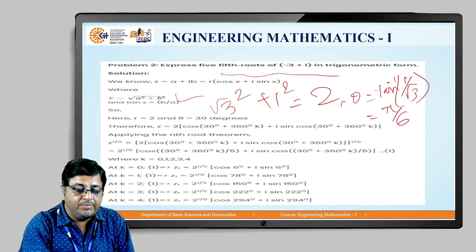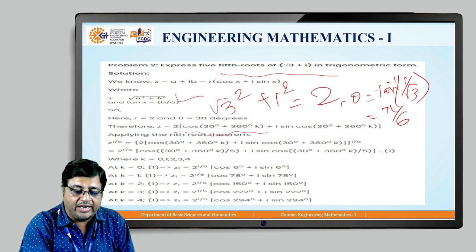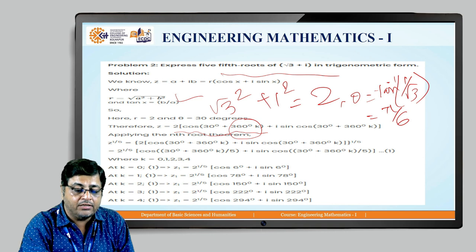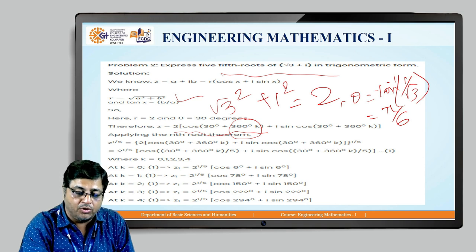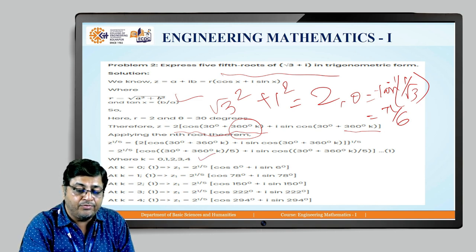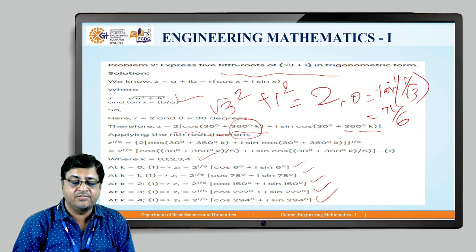So the complex form will be 2 times (cos 30° + i sin 30°). Now to find the fifth root, we have to add the angle 360°·k. So we get 2 times (cos(30° + 360°k) + i sin(30° + 360°k)), where k is a whole number: 0, 1, 2, 3, 4. Putting these values of k into this equation, we get the five roots.